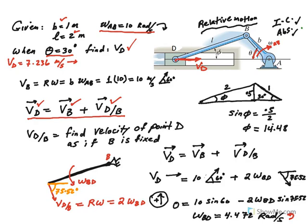Finding velocity of B is easy — velocity of B is going to be r·omega. Velocity of B will be perpendicular to this radius, and the length is going to be r·omega, which is the length of the crank. So velocity of B equals B times omega AB.